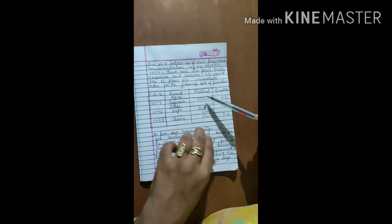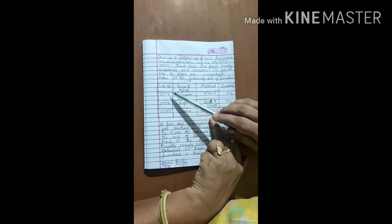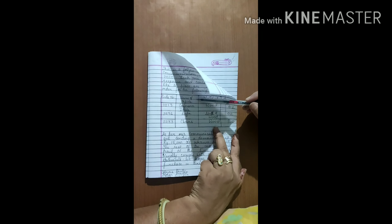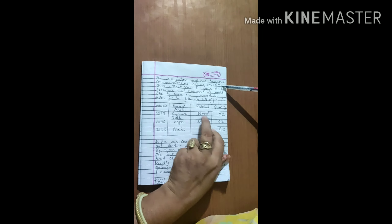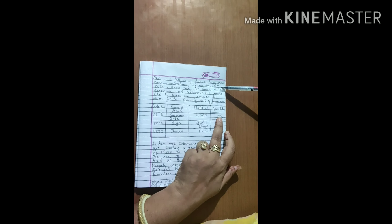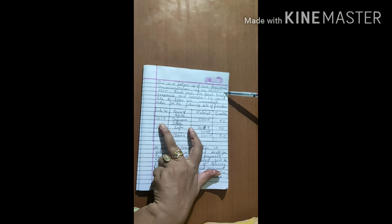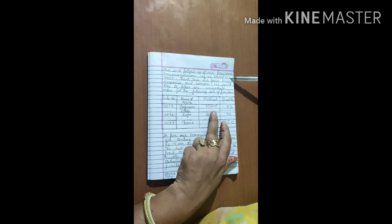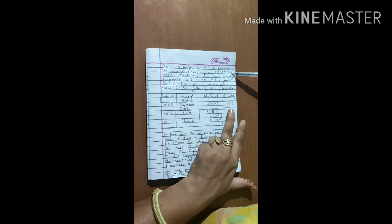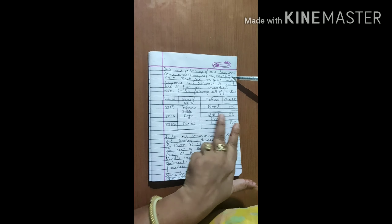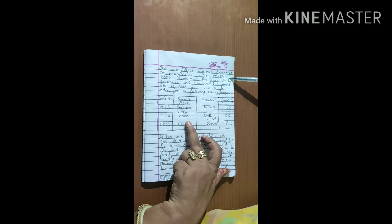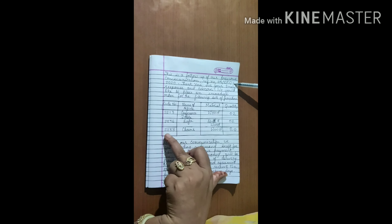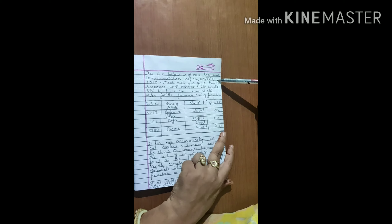Then is your main content, where you have to make one table. You write the code number, the name of the article, the material, and the quantity. For example: code number 2213, conference table, material as needed, quantity 2. Then: sofa, steel and wood, quantity 2. Chairs, wood, quantity 20.